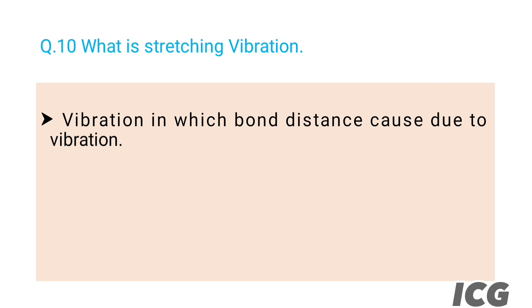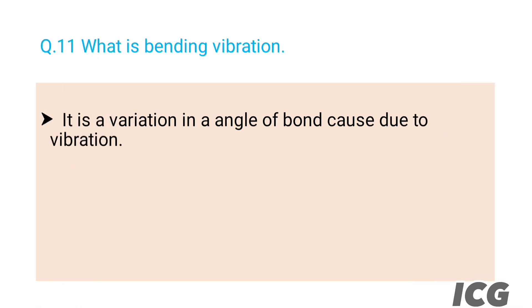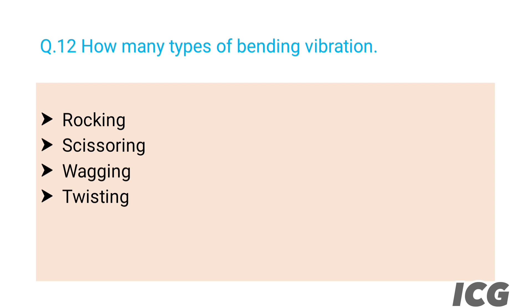The next question is: what is bending vibration? The answer is it is a vibration in which a variation in the angle of a bond caused due to vibration is called bending vibration. The next question is: how many types of bending vibration are there? The answer is there are four types: number one, rocking; number two, scissoring; number three, wagging; and number four, twisting.